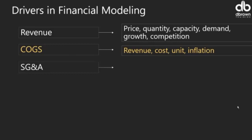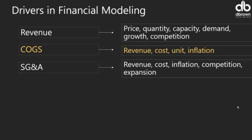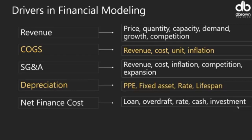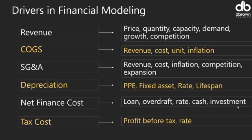For cost of goods sold: if you can't break things down, you can set it as a percent of revenue. If you can break things down, look at the cost per unit and how many units, then factor in inflation — which accounts for time value of money. For selling, general and administrative expenses, almost every line item can be set as a driver to revenue. For depreciation, you need the asset base and depreciation rate. For net finance costs, consider loan financing, overdraft rates, and cash investments. For tax, apply the tax rate to profit before tax.